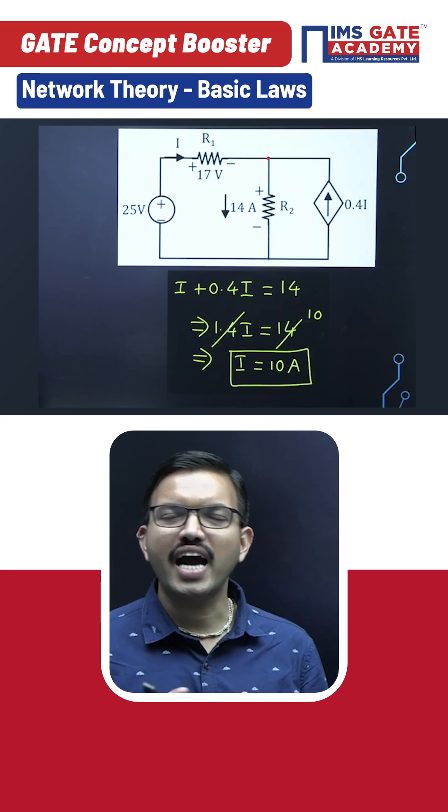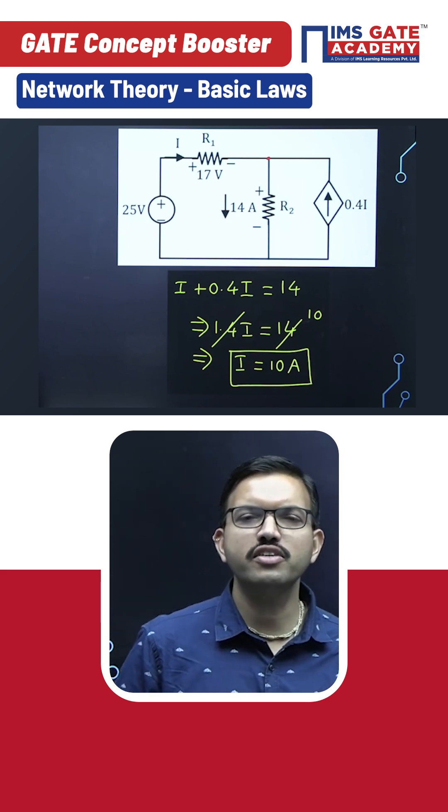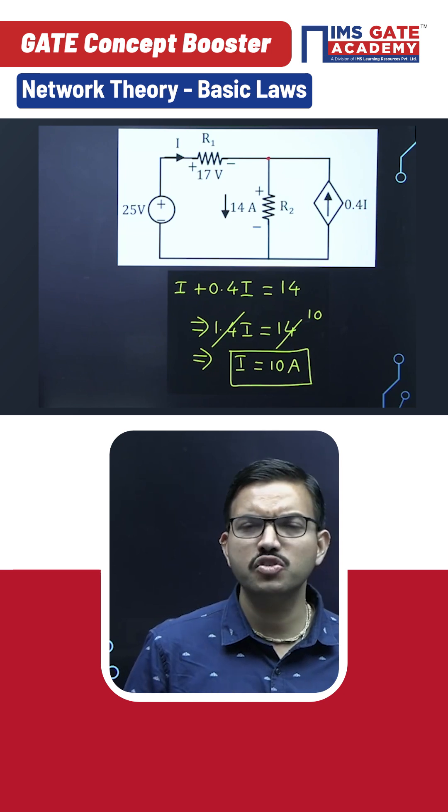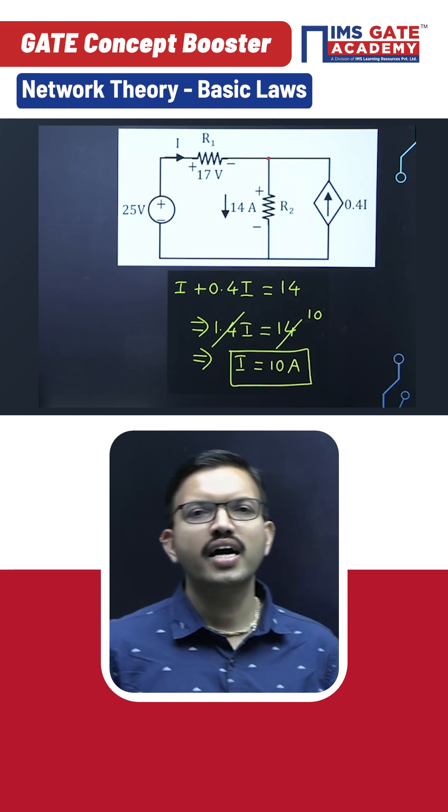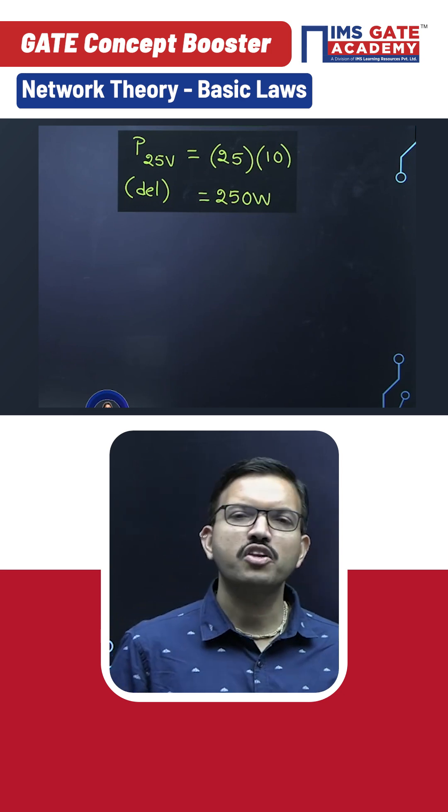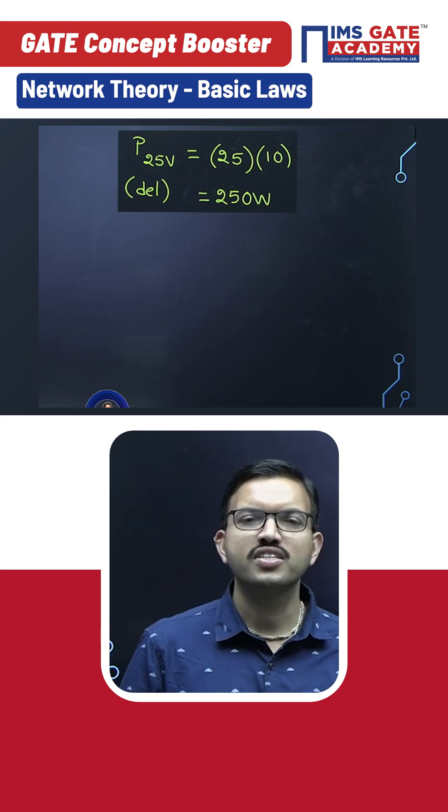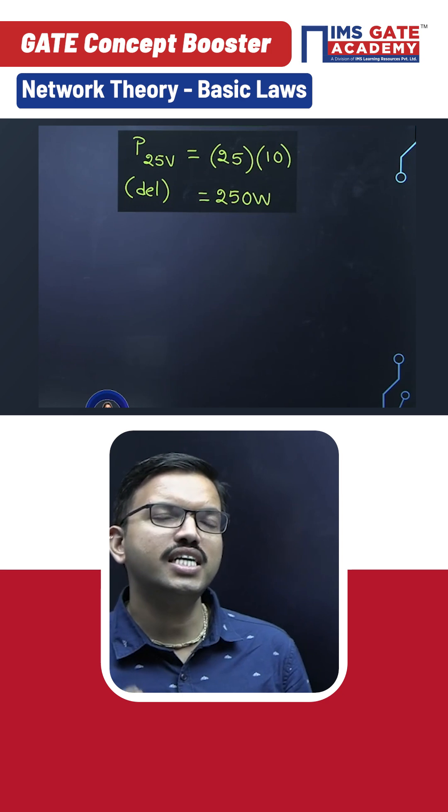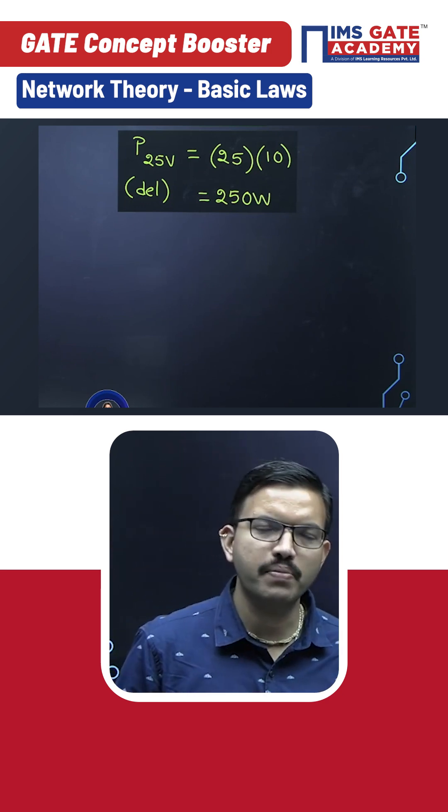Accordingly, you are getting i value as 10 ampere. See the beauty of this question - without using pen and paper you can easily get i value as 10 ampere. And now since they have asked for power delivered by 25 volt source, it's 25 times 10, that is nothing but 250W.